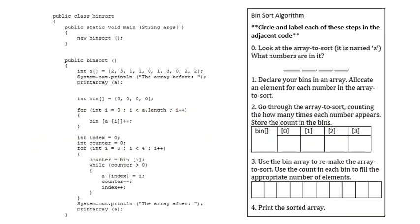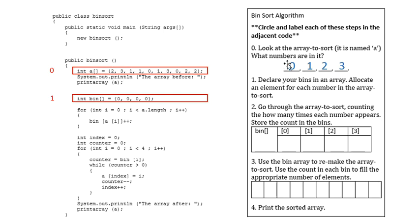The code works like this. First of all, in spot zero we look at the array to sort, labeled A, and we figure out what's inside it. This particular one has the numbers from zero to three. Then we declare the bins for our array, that's right here. And we allocate an element for each number in that array. Because the smallest one was zero and the biggest one was three, that's what we picked.